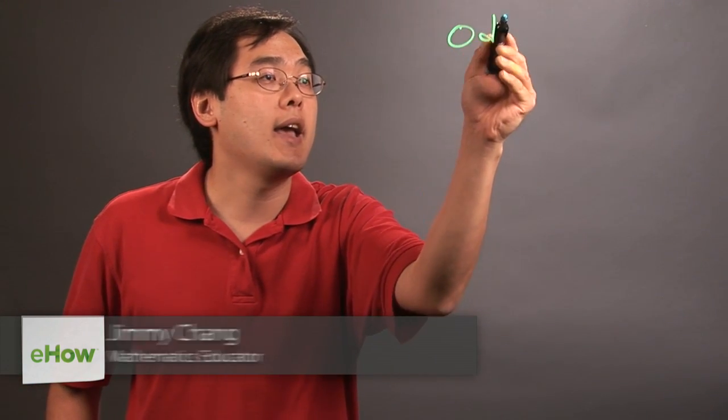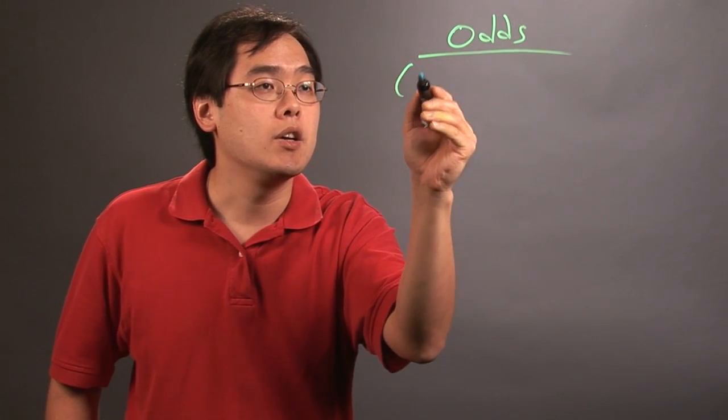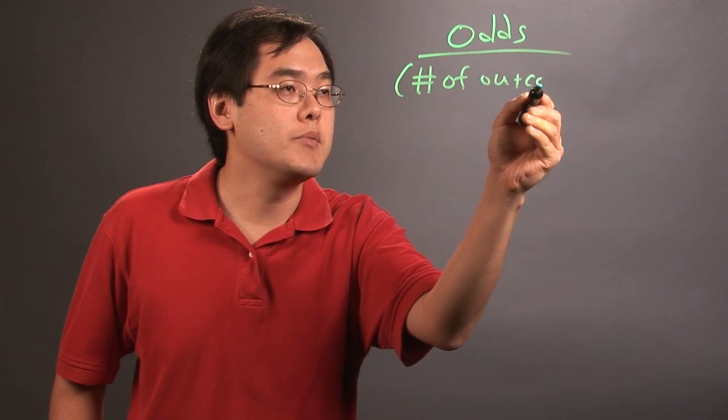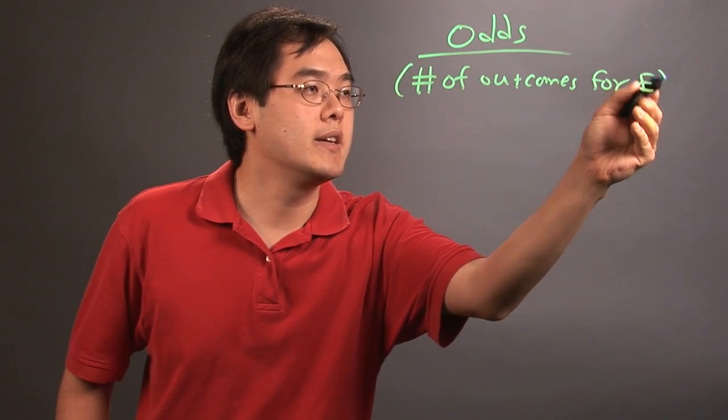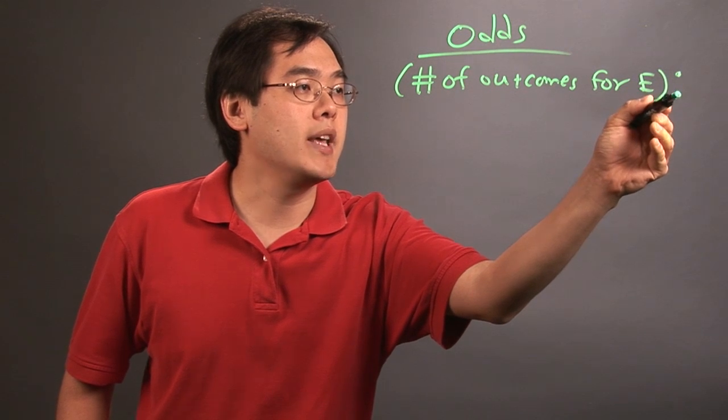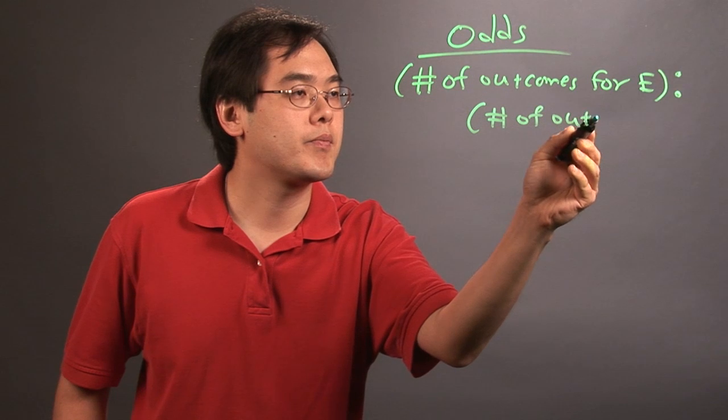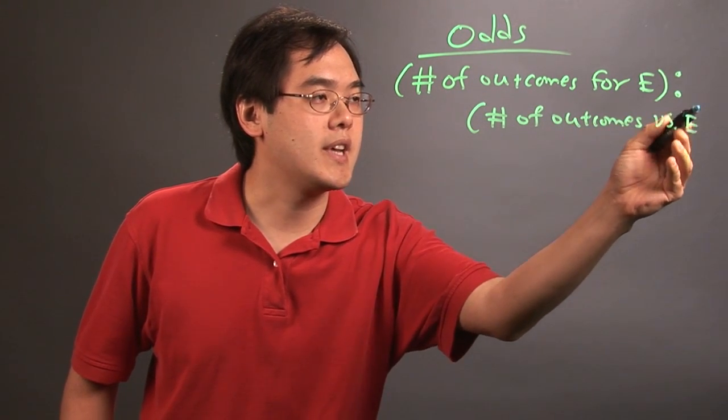Now, in terms of measuring odds, there's actually a formula associated with that. The odds of an event happening, you're taking the number of outcomes for the event E, and you're pitting it, and there's a colon there, the number of outcomes against the event happening.